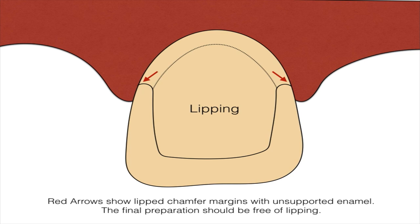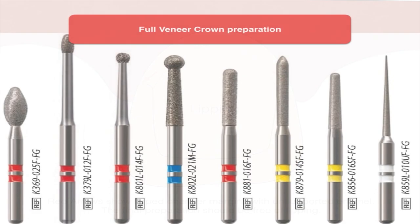If unsupported enamel is left around the tooth, it is called lipping, and this should be avoided during tooth preparation. Next are the steps in tooth preparation, and this is the armamentarium required.